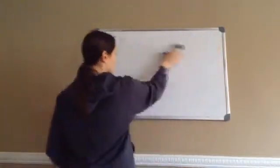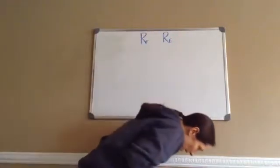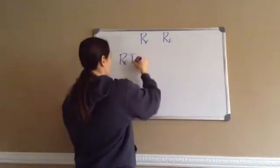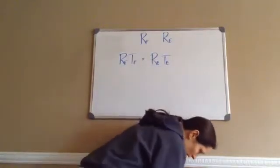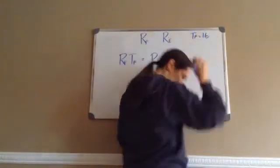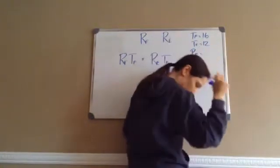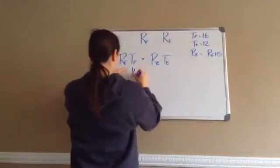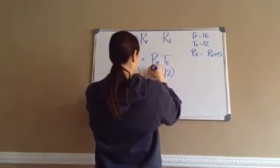Make sure you're getting it — pay real good attention. Solve for RF and RE, the rate of Frank and the rate of Eli. Here's the equation: rate of Frank times time of Frank equals rate of Eli times time of Eli. They give me TF is 16, TE is 12, and RE equals RF plus 15.